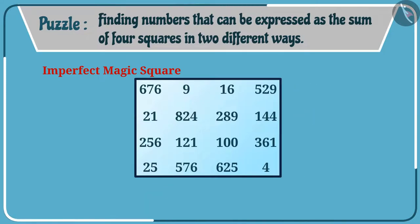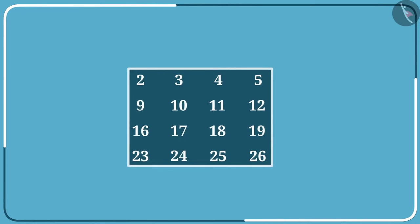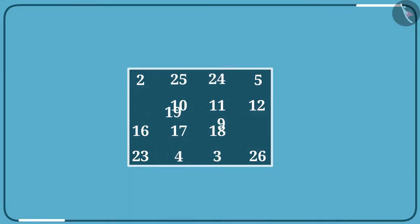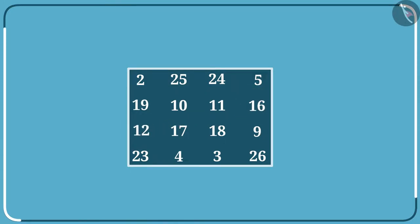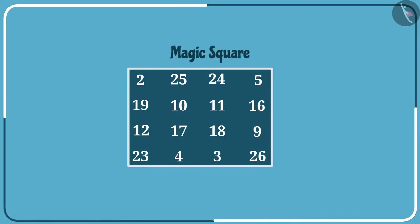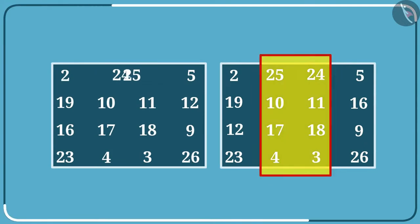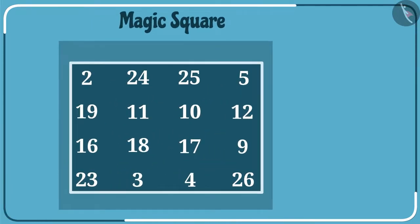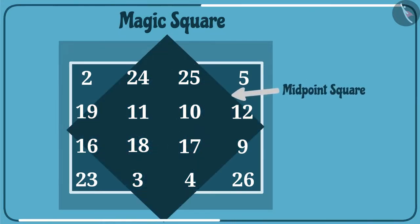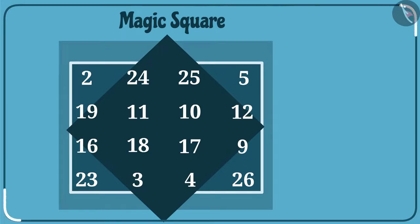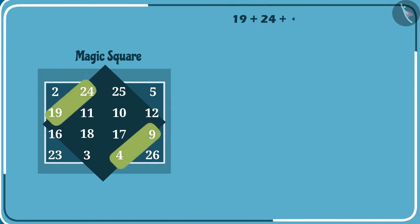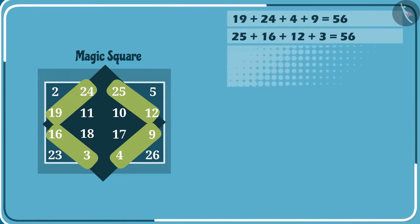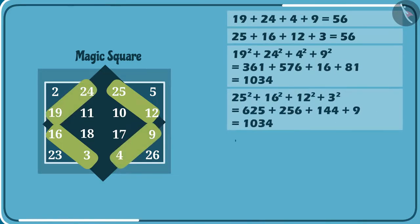There are many ways to make a magic square. In this square, I can interchange the positions of 3 and 25, 4 and 24, 9 and 19, and 16 and 12 to get another magic square. I can also interchange the mid column and that is also a magic square. I will form a midpoint square, then add the numbers on the opposite side of the mid square — their sum is equal. Similarly, the sums of their squares and the sums of cubes are also equal. Isn't it interesting?